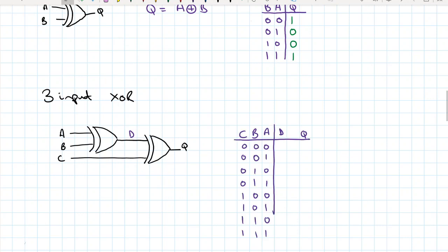Okay, let's first of all concentrate on these first four lines. C is equal to zero, so we're just looking at A and B so we can produce a D output. Okay, so a D output: no exclusivity, exclusivity, exclusivity, no exclusivity. Okay, happy with that.